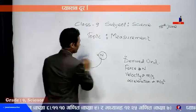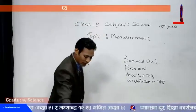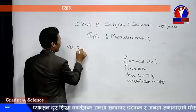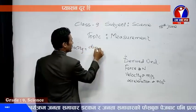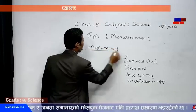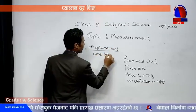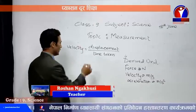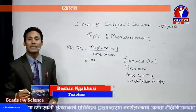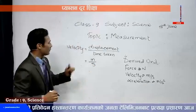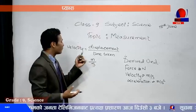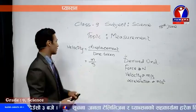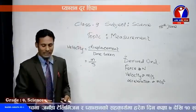Similarly, the unit of velocity is called a derived unit because velocity equals displacement divided by time taken. Displacement is length, so its unit is meter, and time is measured in seconds. Therefore, the unit of velocity is meter per second, and it can be expressed in terms of meter (unit of length) and second (unit of time), which is why it is called a derived unit.